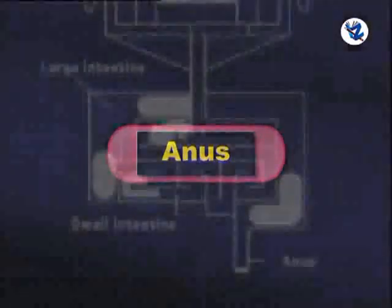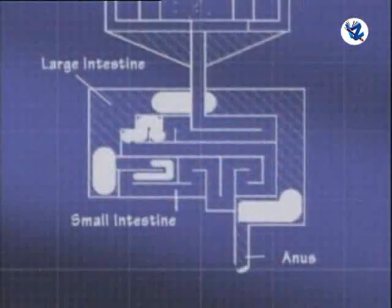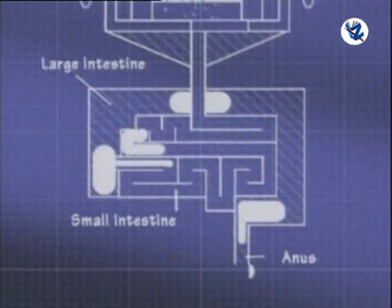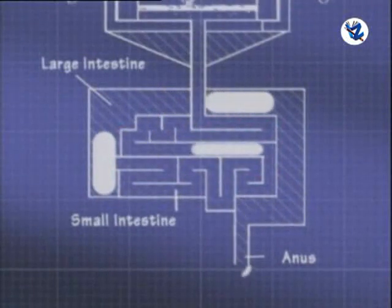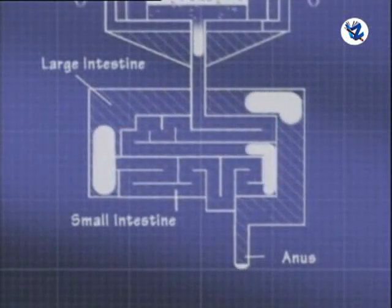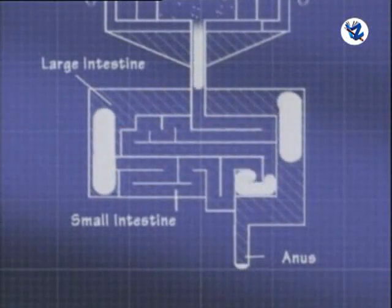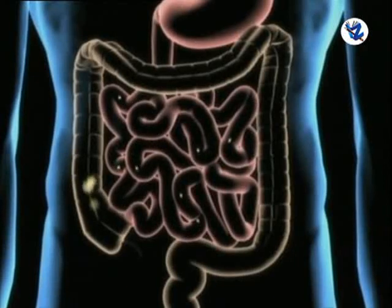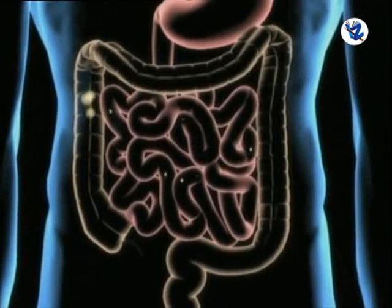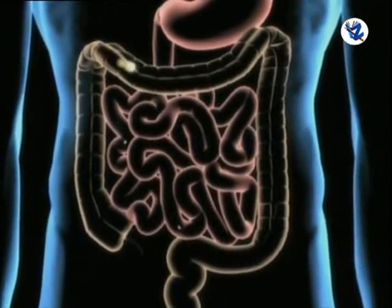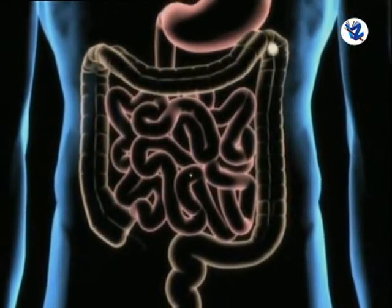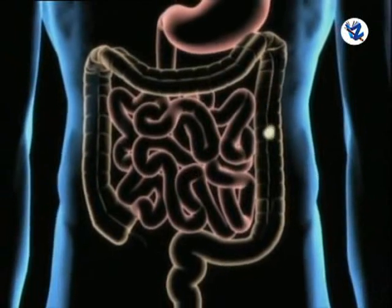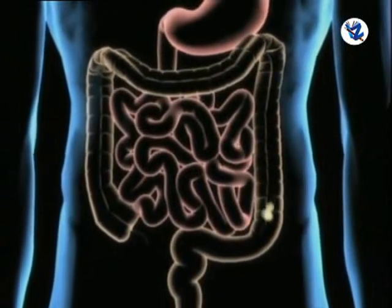Then anus — the rectum opens to the outside by an opening called anus, which is guarded by a sphincter. It removes undigested matter outside by the process known as defecation or ejection.